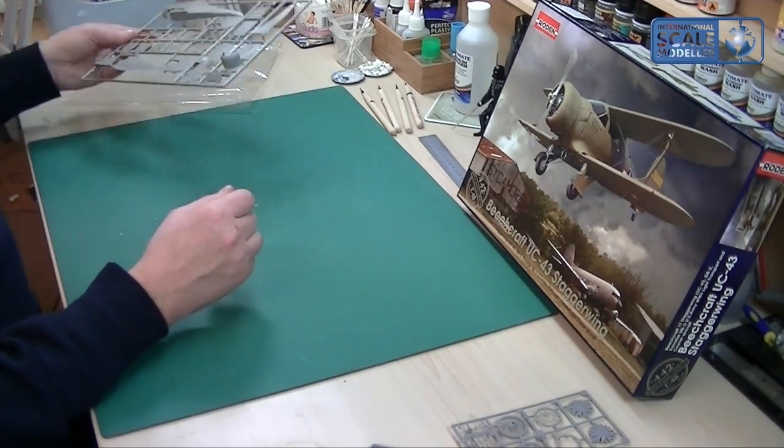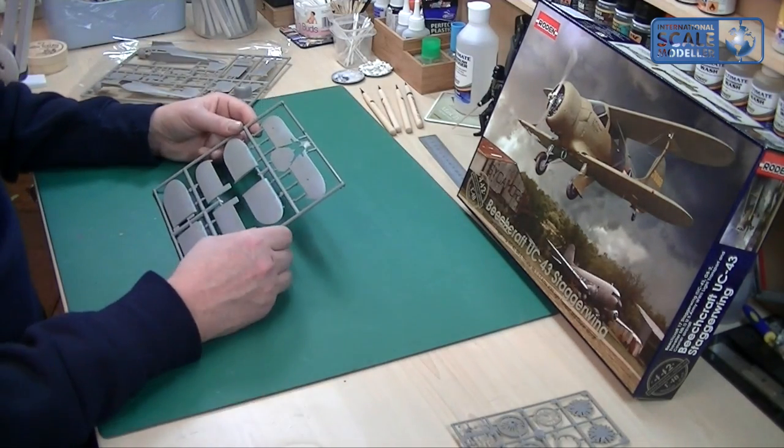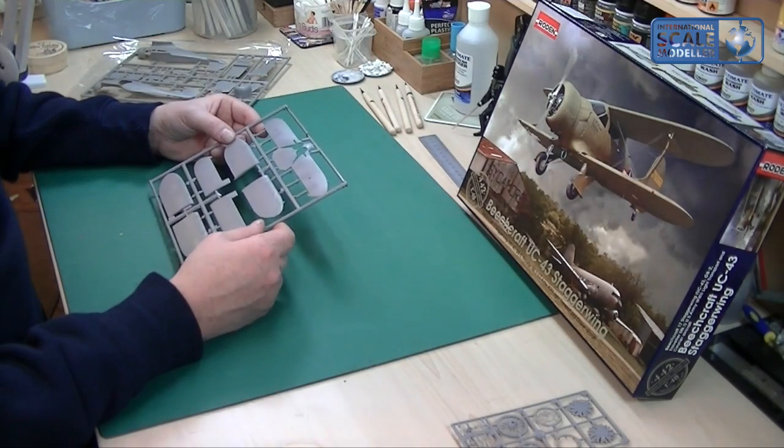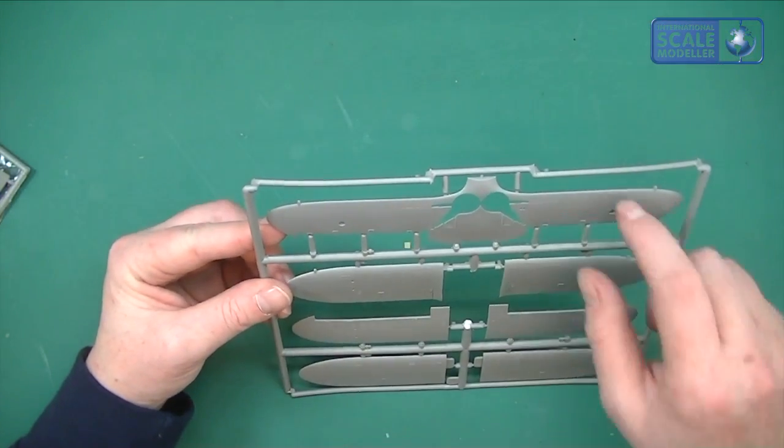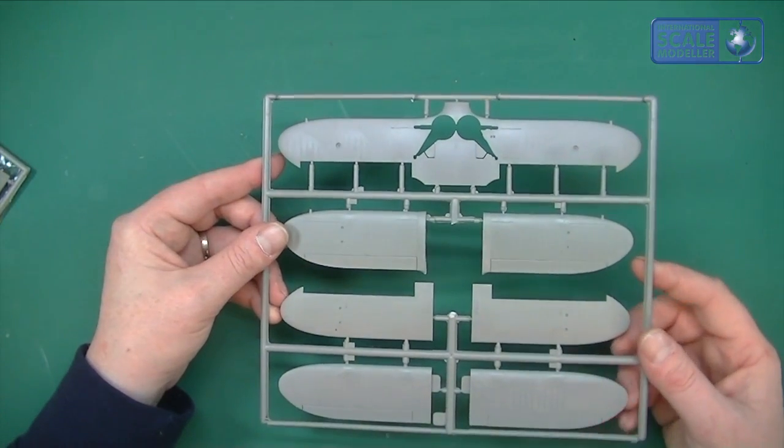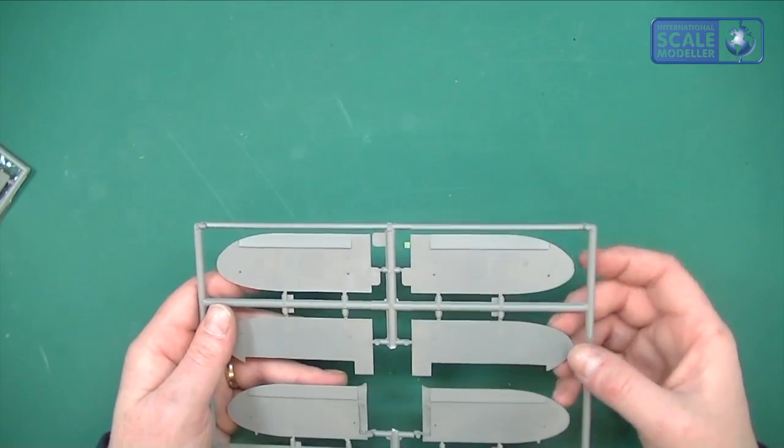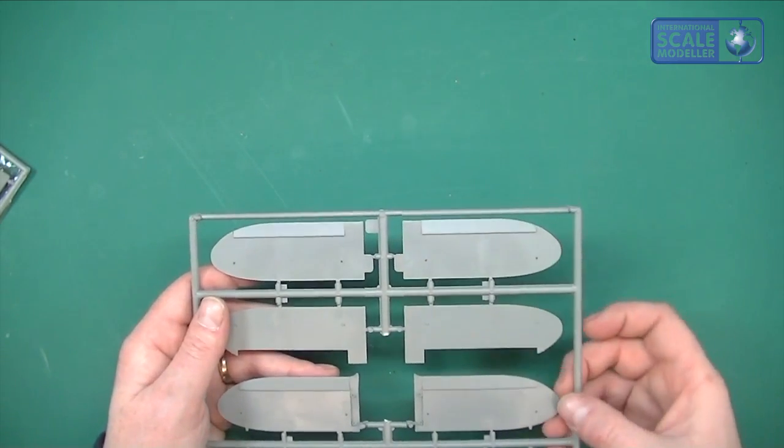On to the wings. We've got another quite decent sized sprue here with upper and lower of both wings. Now there actually isn't any flash on this sprue at all, not on the parts themselves. I'm just trying to see if there's some burring. There's the tiniest amount of burring.